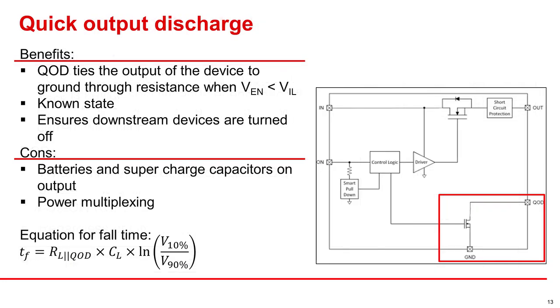Quick output discharge is available for some of our devices, which ties the output of the device to ground when the on-pin is below its falling threshold voltage. This helps ensure that the output is in a known state and that downstream devices are off or not floating. The cons of QOD come into play for power muxing applications and charging super caps, because you will always have a leakage path on the devices that are turned off.